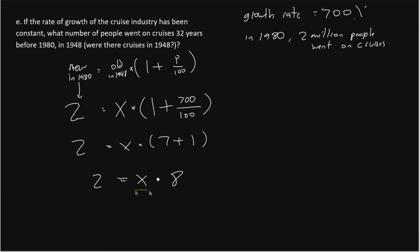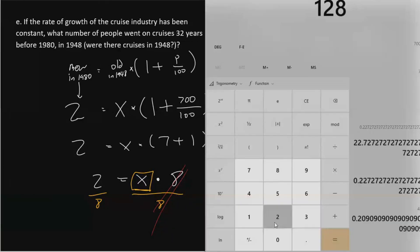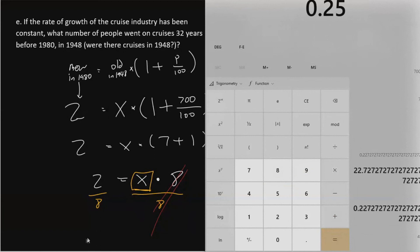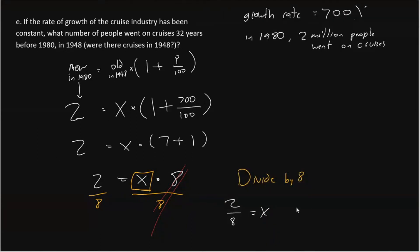So now we need to try to solve for X. And to do that, we will divide by 8. We will divide by 8 on both sides. So the 8s cancel out, and we have 2 divided by 8 equals X. And then we go to our calculator. Some of you might know this already, but 2 divided by 8 gives 0.25. And this will be in millions. So we can say 0.25 million people went on cruises in 1948.